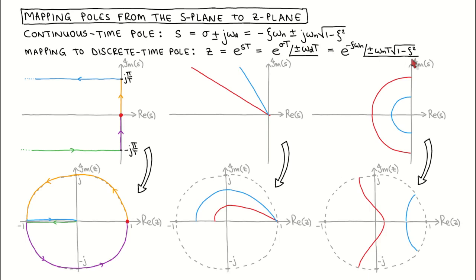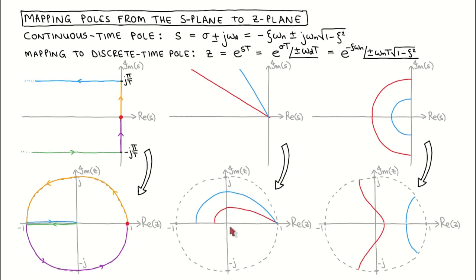If we keep the damping fixed and vary the natural frequency, we get radial lines in the s-plane. The blue line corresponds to low damping and the red line corresponds to high damping. In the z-plane, as the natural frequency increases the magnitude decreases as the angle increases, which means it is mapped to a spiral on the z-plane. Poles with high damping are therefore located close to the real axis between zero and one, and poles with lower damping are located closer to the unit circle.